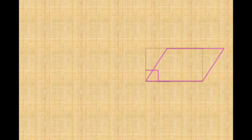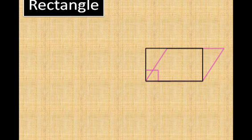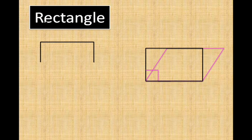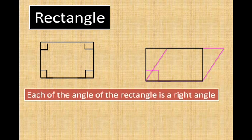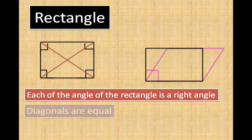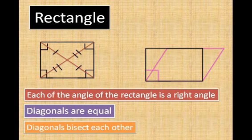Let us take a parallelogram. If any corner angle of a parallelogram becomes a right angle, then that parallelogram is called a rectangle. Each angle of a rectangle is a right angle. The diagonals of a rectangle are equal in length, and the diagonals bisect each other.